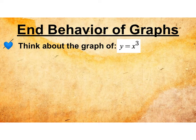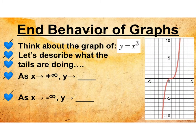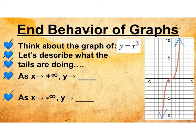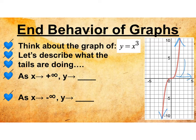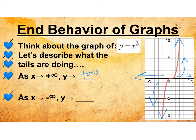Think about the graph y equals x cubed. Can you picture that in your head? It's going to look like a squiggle, and I'm going to add arrowheads. As x approaches positive infinity, y is also approaching positive infinity. And as x approaches negative infinity, y is approaching negative infinity.